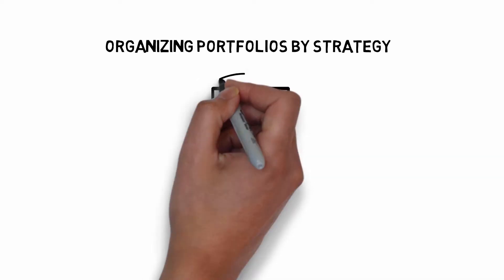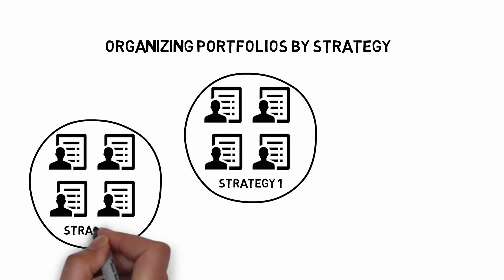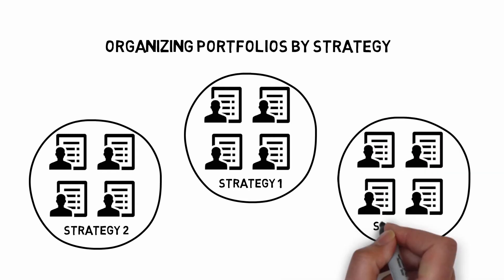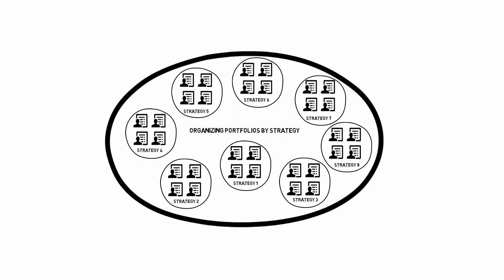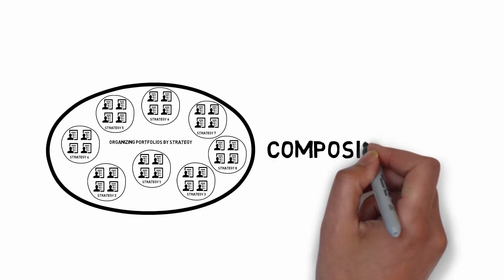Organizing Portfolios by Strategy. A composite is an aggregation of portfolios with similar objectives. The first step in constructing composites is to group all of the portfolios your firm manages by strategy, which will later be refined by applying composite rules.